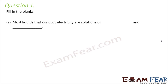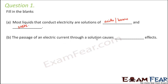Question number one: fill in the blanks. Most liquids that conduct electricity are solutions of — so whenever a liquid consists of acids, bases, or salts, they are generally good conductors. Examples include lemon which contains citric acid, and salts which contain sodium chloride. The passage of electric current through a solution causes chemical effects.